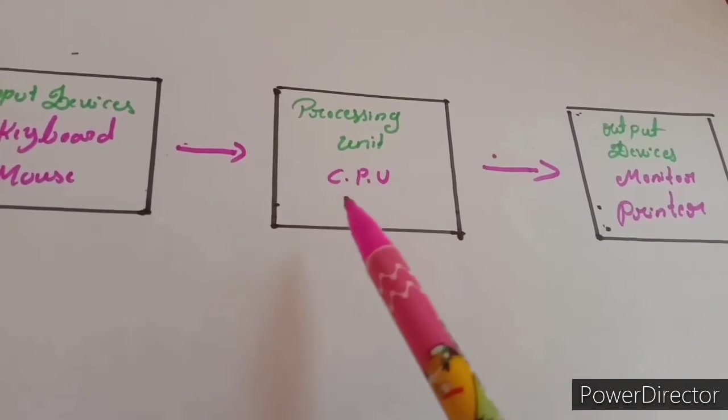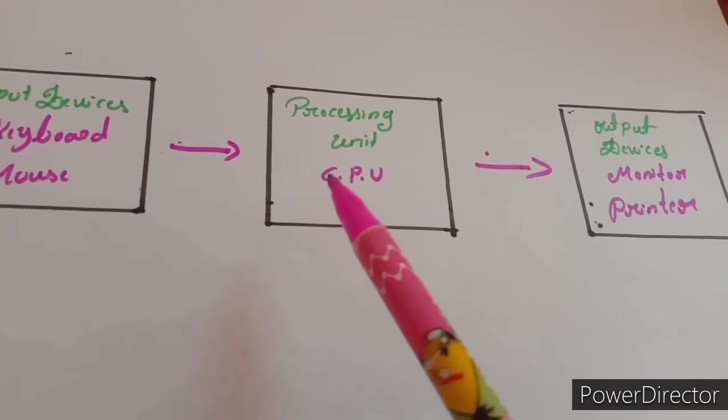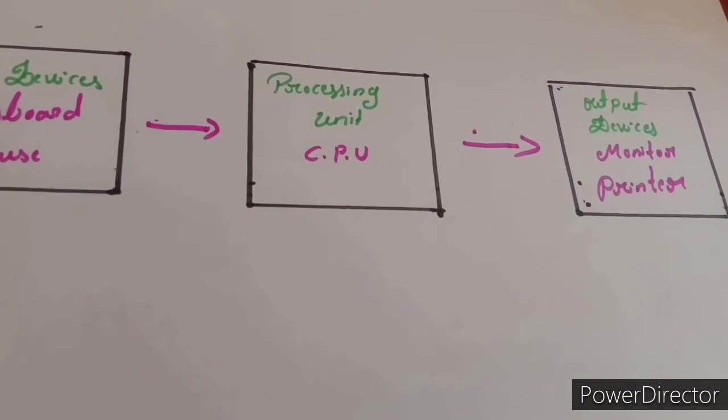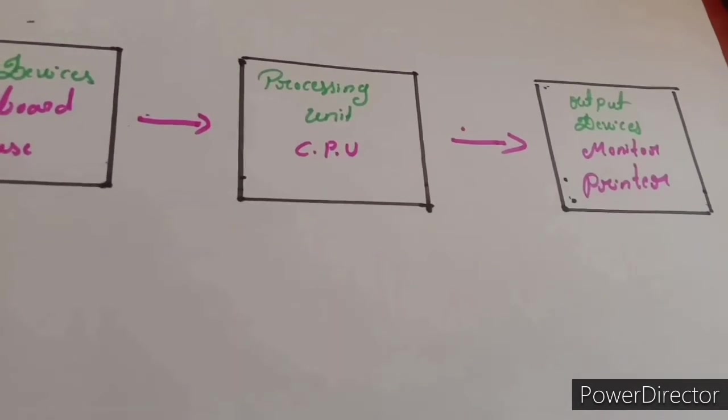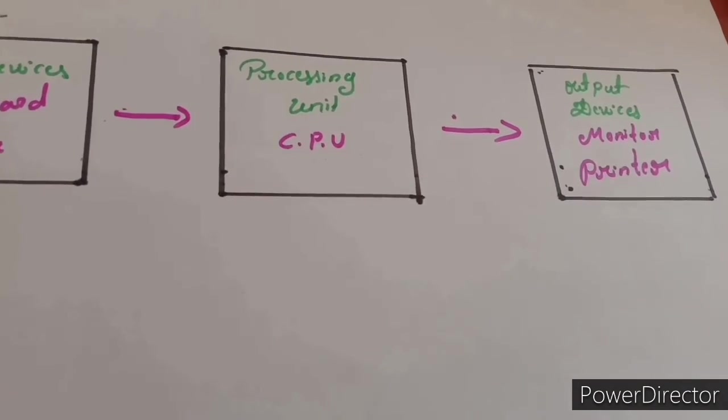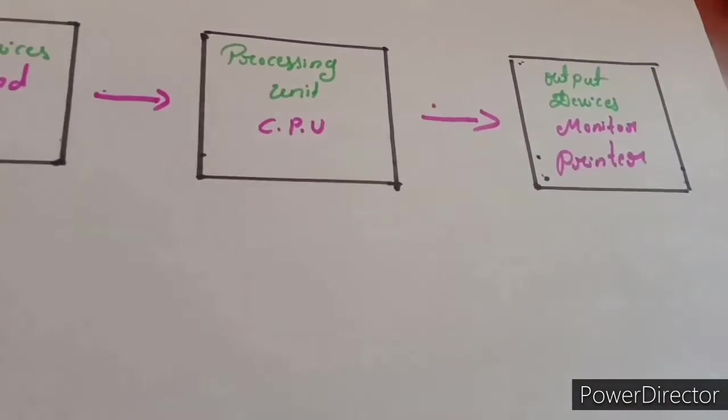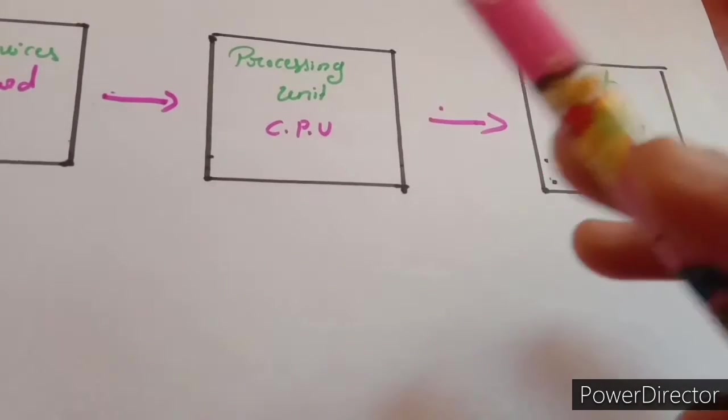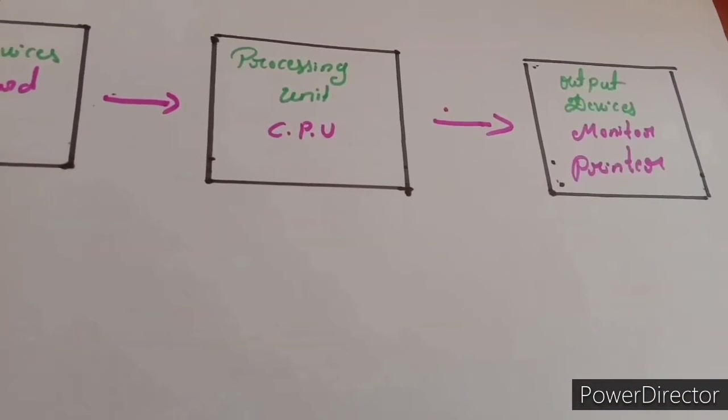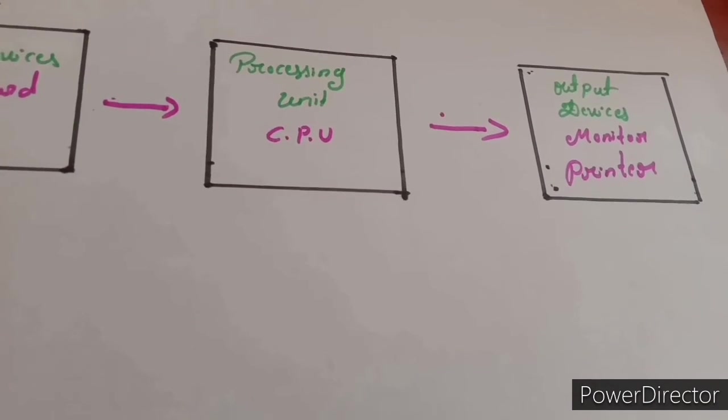Next, Processing Unit: CPU. CPU Long form Is Central Processing Unit. CPU Is the Brain Of the Computer. The Central Processing Unit is the Processing Unit. It processes Data According to Instructions from the Program And generates Information. The CPU Also Stores Processed Data Which you Can Retrieve Whenever You Want.